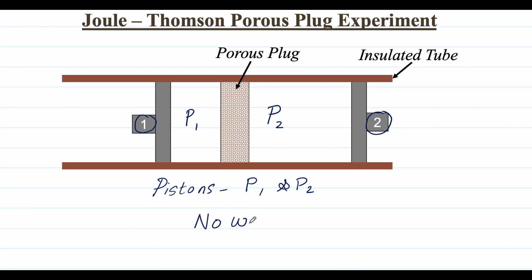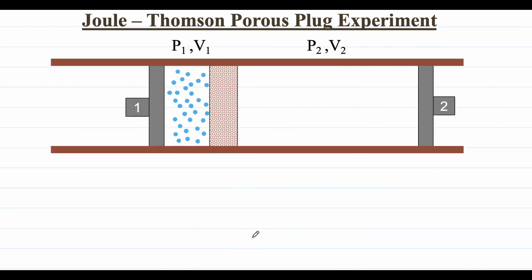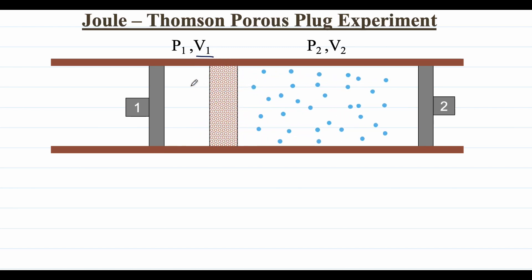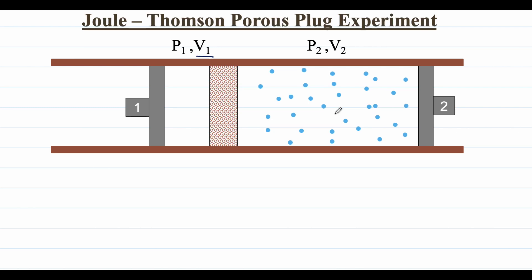The pistons do no work, and since everything is insulated, there is no heat transfer happening throughout the experiment. Gas at initial volume V1 expands into the right side of the porous plug to attain a final volume V2.